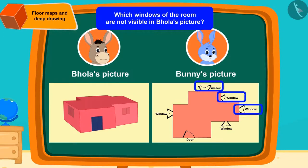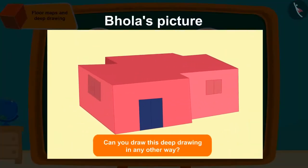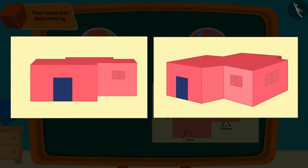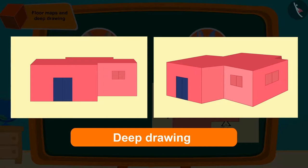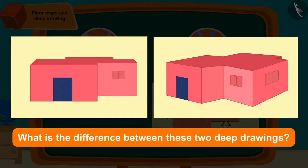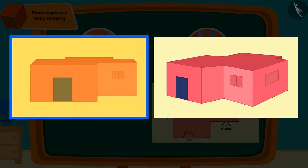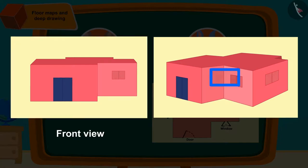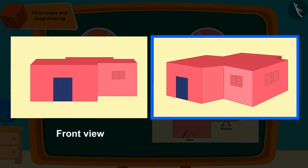Can Bholla make this deep drawing in any other way? You can try to make such a picture in your notebook by pausing the video. Bholla can also make a deep drawing of the room in this way. Children, can you tell what is the difference between these two deep drawings? Actually this picture is made by looking at the room from the front, while this deep picture is made by looking at the room from the right side.